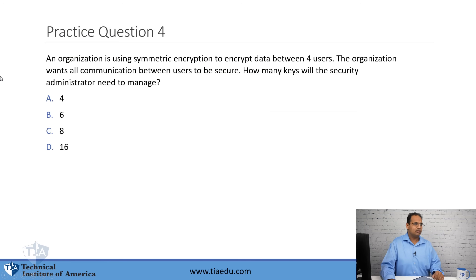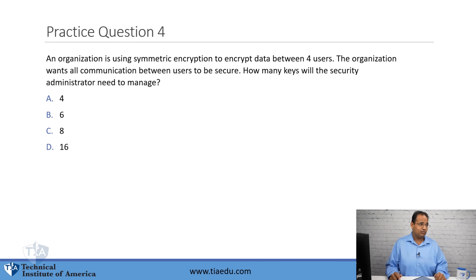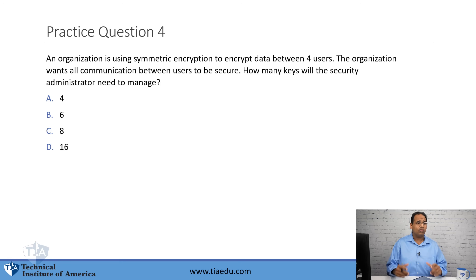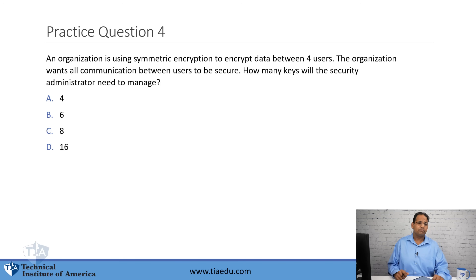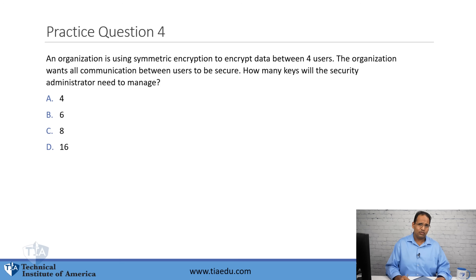Question number four — a cryptographic formula question: An organization is using symmetric encryption to encrypt data between four users. The organization wants all communication between users to be secure. How many keys will the security administrator need to manage? A, four. B, six. C, eight. D, sixteen. You can pause the video right now and try to calculate this if you know the formula.